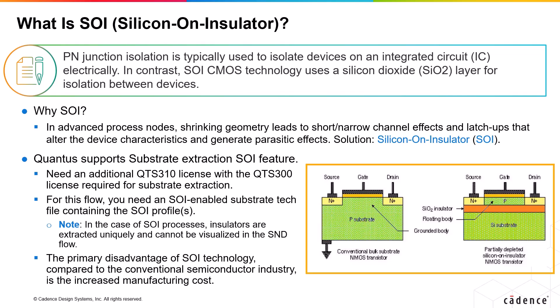Typically, PN junction isolation is used to isolate devices on an integrated circuit electrically. In contrast, SOI uses a silicon dioxide, SiO2, layer for isolation between devices.